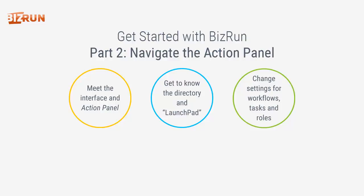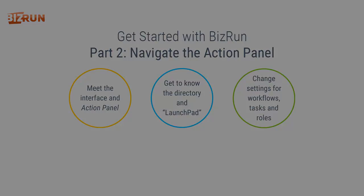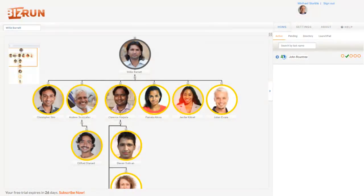Welcome to part two of the Get Started with BizRun video series. In this video, you'll meet the portion of the interface we refer to as the action panel. In the action panel, you'll get to know the directory and the launchpad. You'll also learn to change settings for workflows, tasks, and roles. We'll continue to familiarize you with the interface using a sample company. You'll learn how to build your own organization in part three of this series. Let's get started.